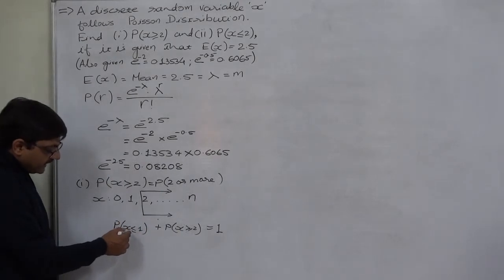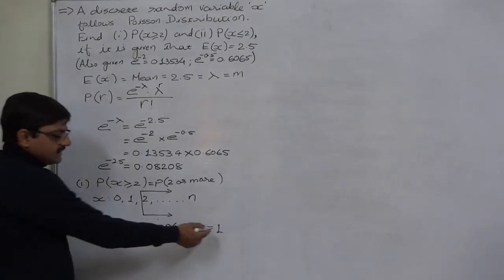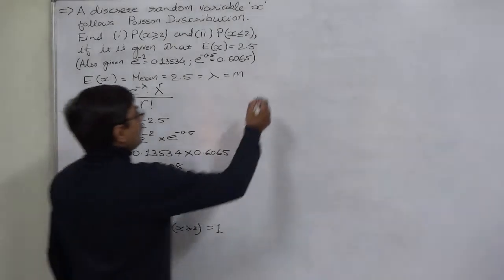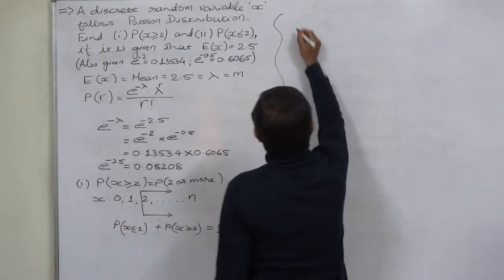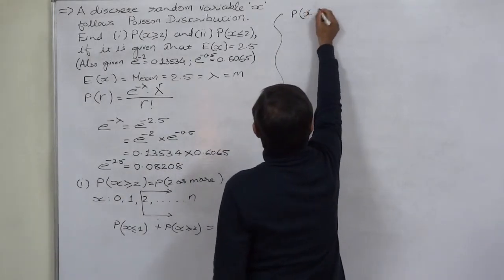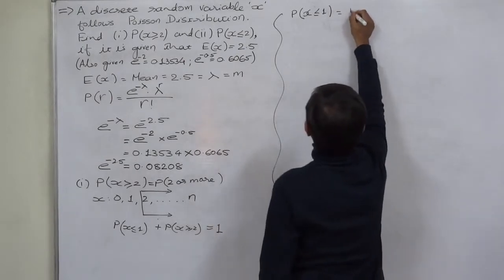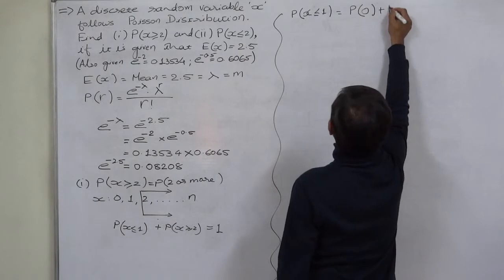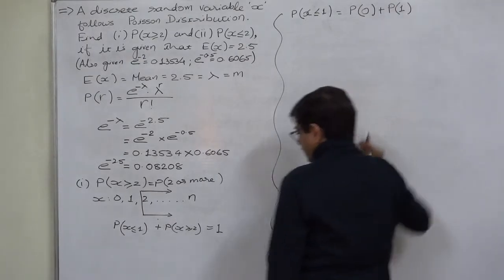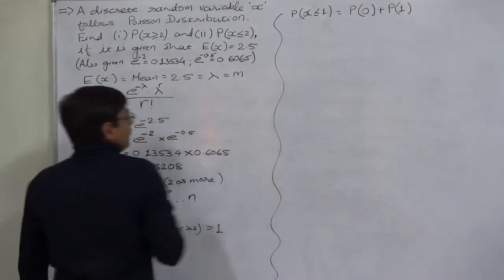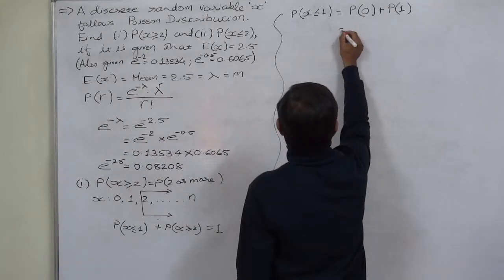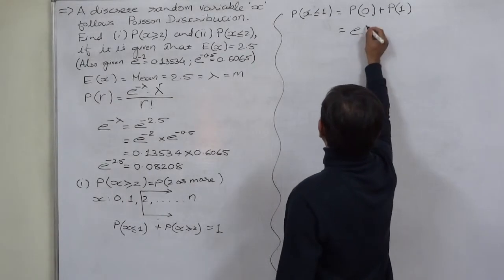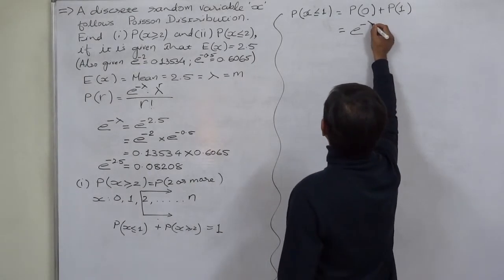If we find P(X ≤ 1), we can easily find P(X ≥ 2) since they are complement events. So let us first find out P(X ≤ 1), which broadly means P(X = 0) + P(X = 1).